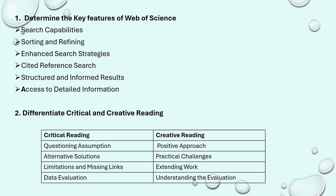Enhanced search strategies — instead of simply typing a problem statement, we can move into a search technology more than that, like AI-based search. And cited reference search: based on the reference cited in a particular paper, the search can be made in Web of Science. Structured and informed results — you can have structured results that predict how the structure of a paper would be. Access to detailed information — it provides not just the title but also the author's name, year of publication, and what kind of journal or conference it has been published in. So these are the key features.